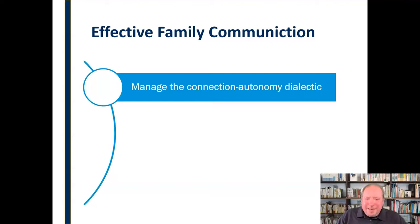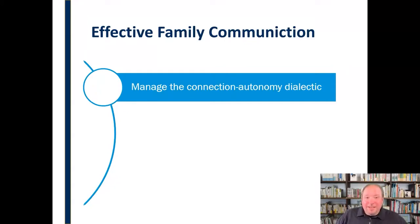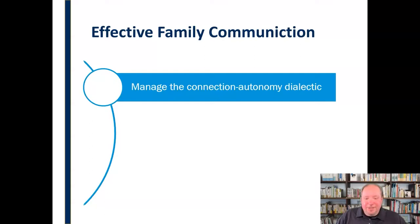The connection-autonomy dialectic is the idea that we'd like to be connected — we want to be known, to know others, to be with others — but at the same time we have this desire for independence. It's like a pendulum swinging back and forth, depending on the individual and personality. Remember that everybody else is feeling that same dialectic too, so you may be feeling connection while they're feeling autonomy. In a family where you have expectations for connection and may be living in the same home, you have to really actively manage that balance between independence and connection.